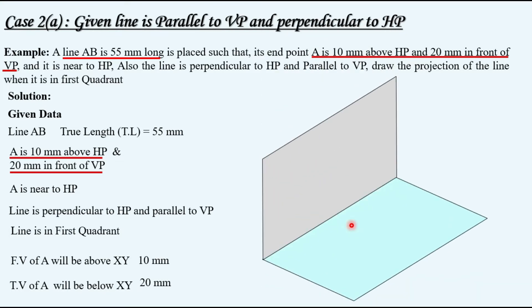Let's understand the question with the help of this 3D model. So we have this horizontal and vertical plane like this. We are looking from this side. The given distance is 20 mm from vertical plane in front and 10 mm above horizontal plane. So this is a point.